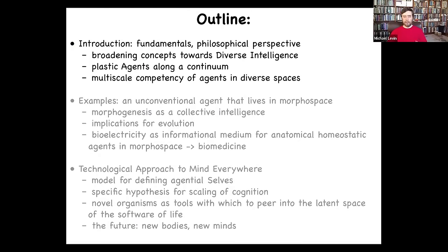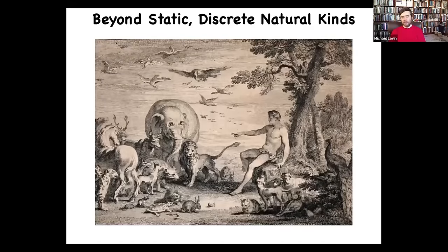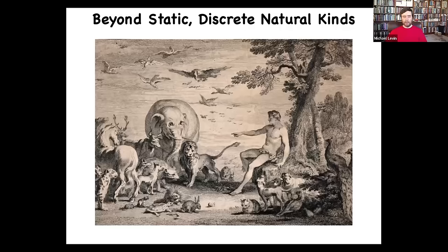The first part of the talk will set a philosophical foundation and go over some examples that help us stretch our thinking. This is a well-known painting — Adam naming the animals in the Garden of Eden. The worldview that supports this picture is that all the animals here are quite discrete. It's very obvious which one is Adam, and there's a discrete set of other beings with different properties. According to this tradition, it was up to Adam — not God, not the angels — to name the animals, to really understand their true nature. And I think that part's right on the money.